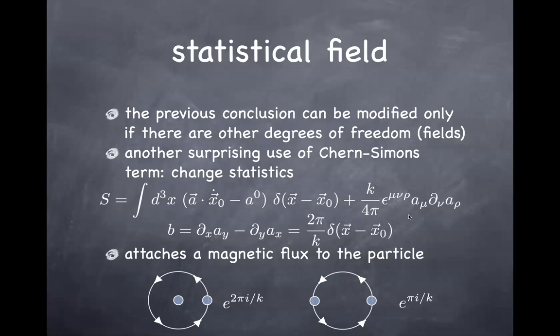Once you allow for this extra possibility of adding this Chern-Simons term for the statistics of the field, this is yet another field you can consider. Therefore you have extra freedom in the effective low-energy action, which in turn allows for the fractional quantum Hall effect.